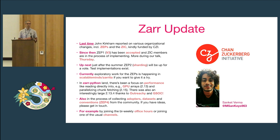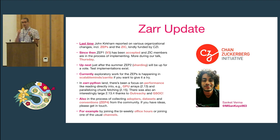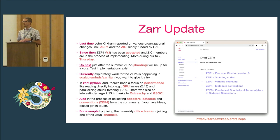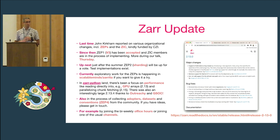Last year, John Kirkham gave an update and talked about the CZI funding that helped us fund a community manager position — that's Sam Kate, who's here — and about the enhancement proposal process we were developing. Since then, the first enhancement proposal, ZEP1, which defined the new version of the format, has been accepted. The implementation council is off implementing the new version. Just after summer, we'll be voting on ZEP2, which covers sharding — a feature for optimizing how data is stored. Most of the exploratory ZEP work is taking place in a new library called ScalableMinds/Zarita. You can pip install that and play with the new formats before everything gets rolled into the main Zarr Python library.